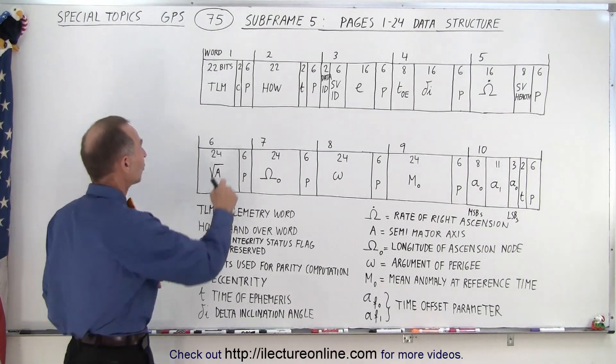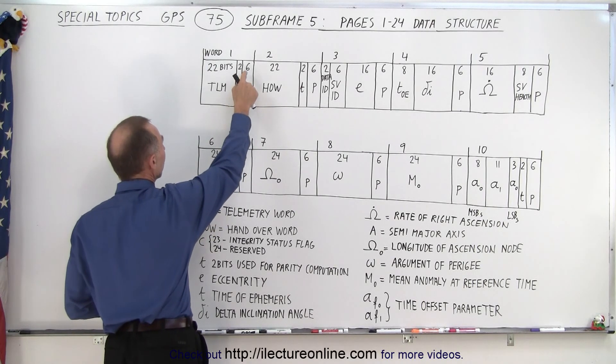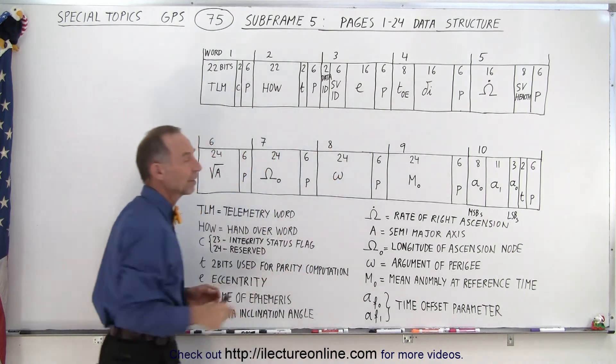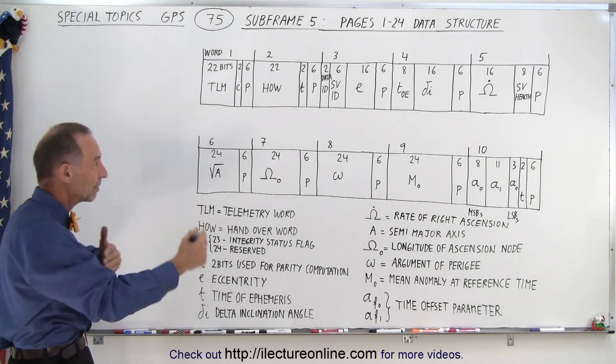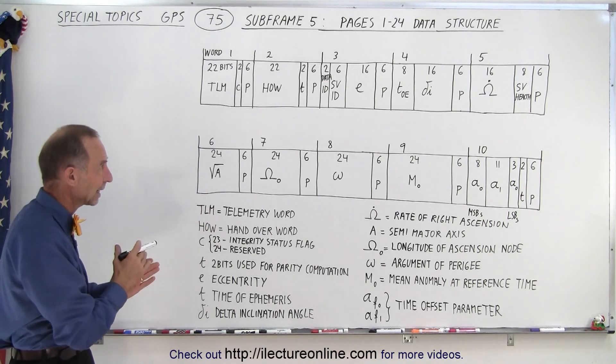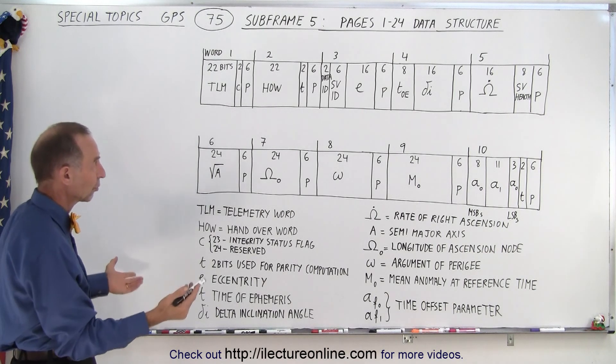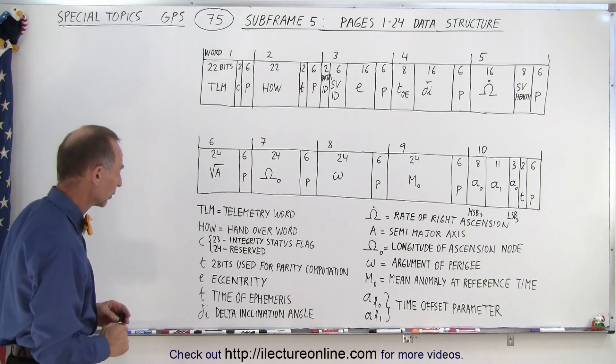But here you can also see that it has C and P. There's two bits associated with C and six bits associated with P. Now notice that every word has the last six bits as the six parity bits to make sure that when the data is received they can check to make sure that the data is indeed correct and trustable. If the parity check doesn't check out then of course you have to ignore the data in that particular word.